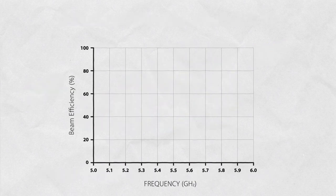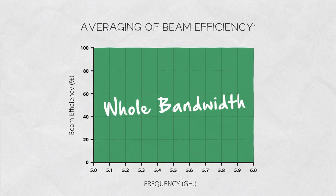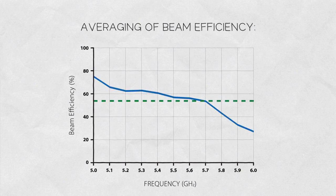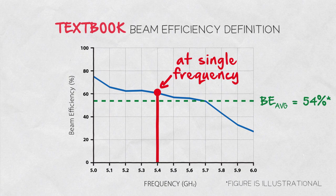For a stable network, antennas for fixed wireless applications should perform well in the whole bandwidth of operation, which is why it makes sense to average beam efficiency over the whole bandwidth. In textbooks, beam efficiency is defined at a single frequency.